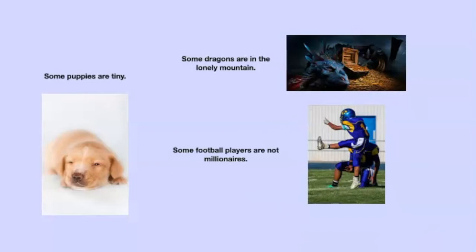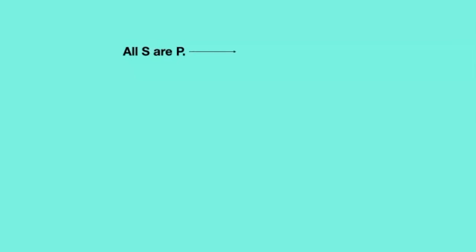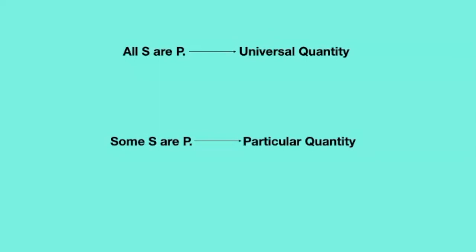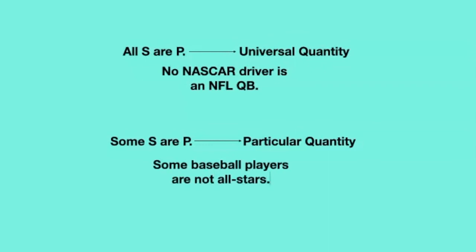In ordinary language, we might not say 'all' or 'some,' but it is clear what we mean based on the context. The difference is very important in logic, so we need to make it explicit. If we use S for subject and P for predicate, a proposition of the form 'all S are P' is universal in quantity, while a statement of the form 'some S are P' is particular in quantity. The distinction between universal and particular also applies to negative propositions. So 'no NASCAR driver is an NFL quarterback' is also a universal proposition — it just happens to be universal negative. And the proposition 'some baseball players are not all-stars' is a particular negative.